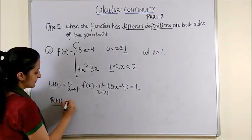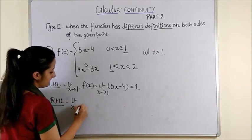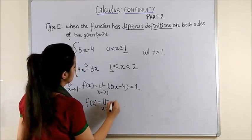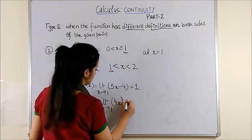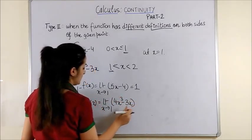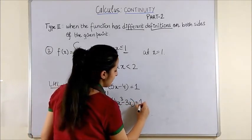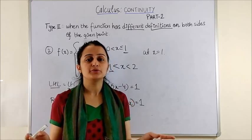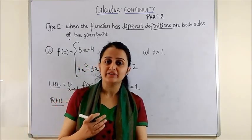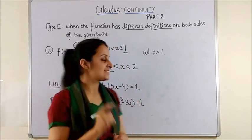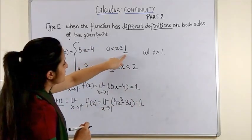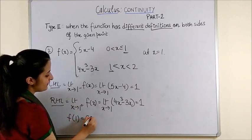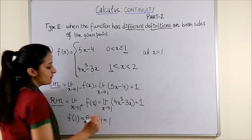For RHL. So, this is 4 minus 3. Once again, the answer is 1. But what do we do for f at 1? This time, you do not have the function separately defined for it. But actually, if you see, it is. So, your x equal to 1 is included in this case. So, f of 1 would be 5 into 1 minus 4 which is once again 1.